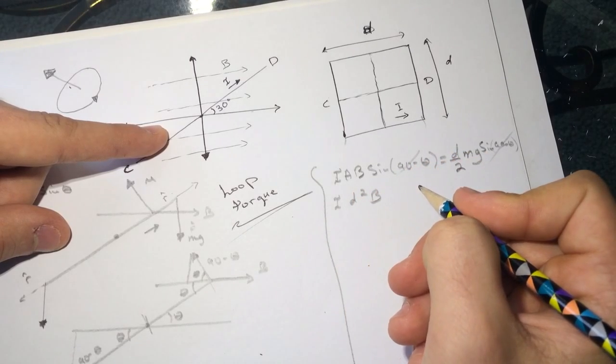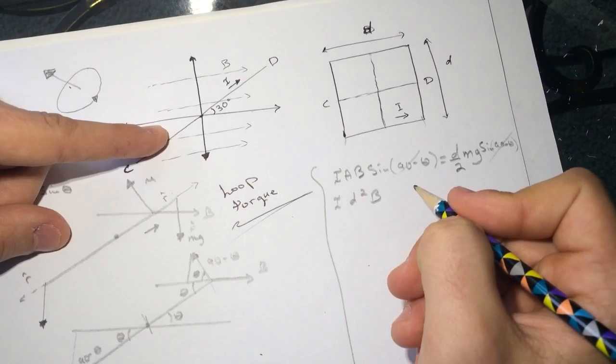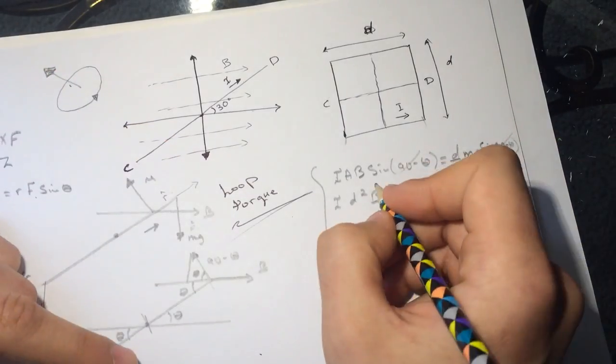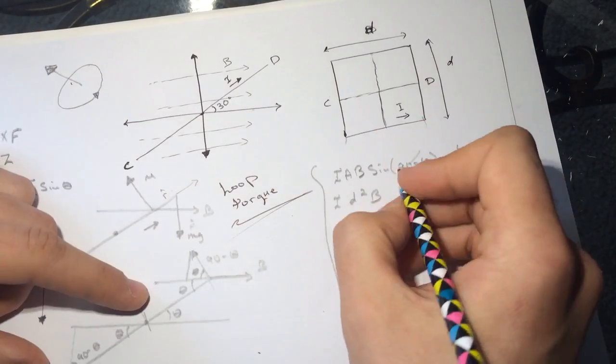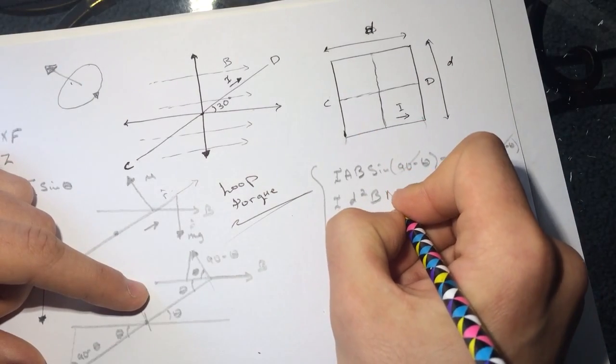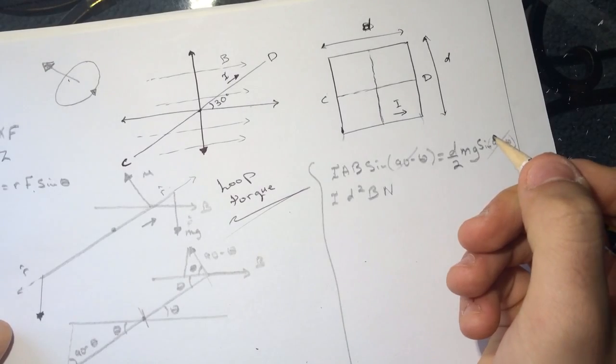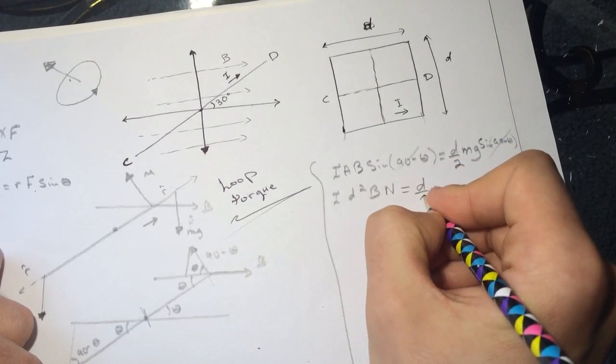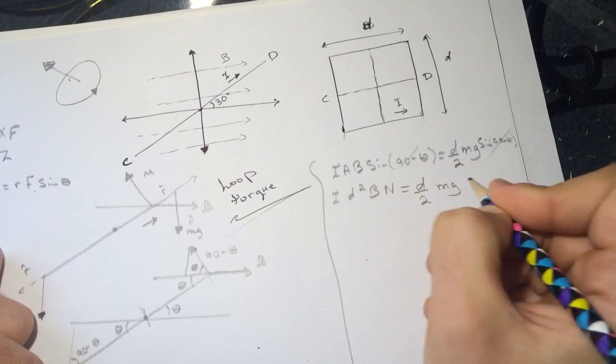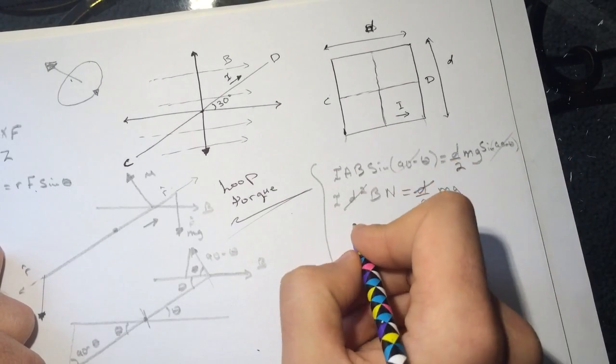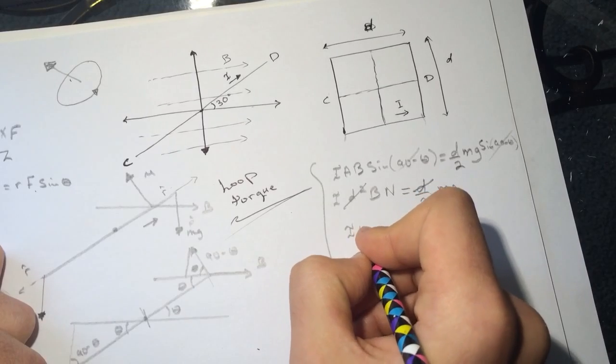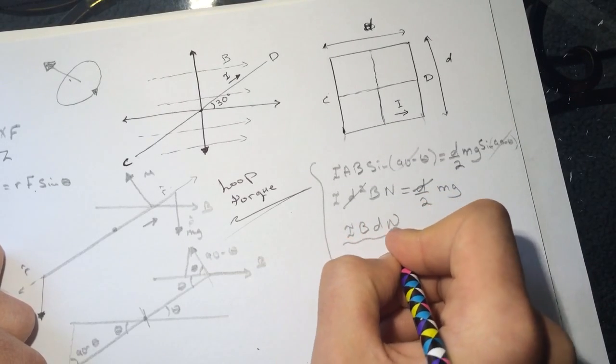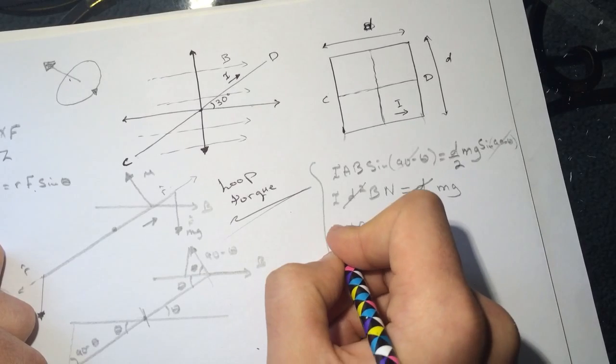And then we have IB. Since in this problem they told us what is n, the number of turns, we're going to multiply this by n. So it's equal to d over 2 times mg. We can cancel one d, so it's IBdn divided by 2, divided by g, and you'll get your mass.